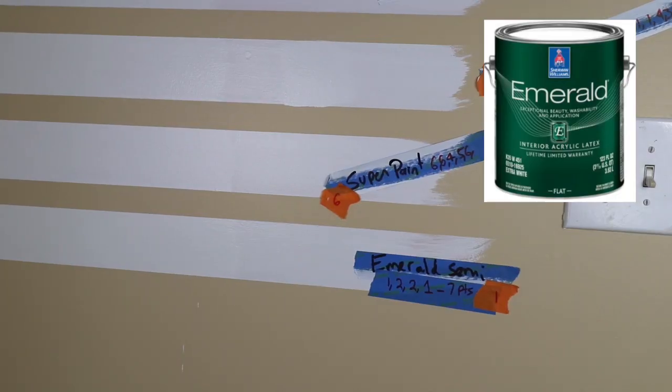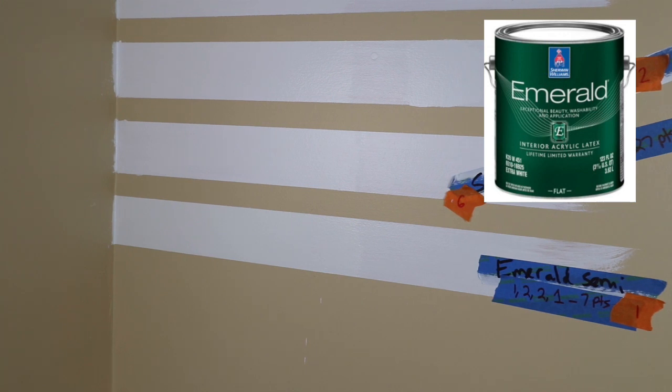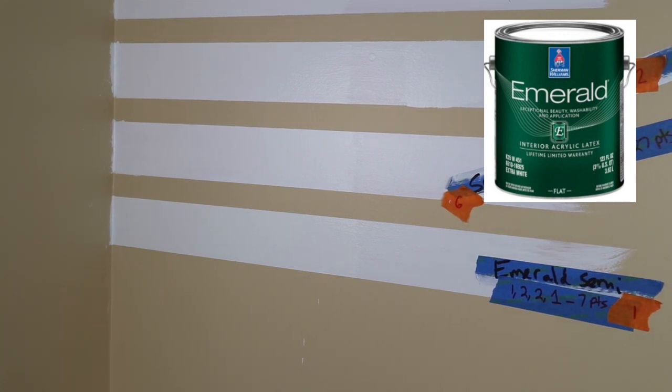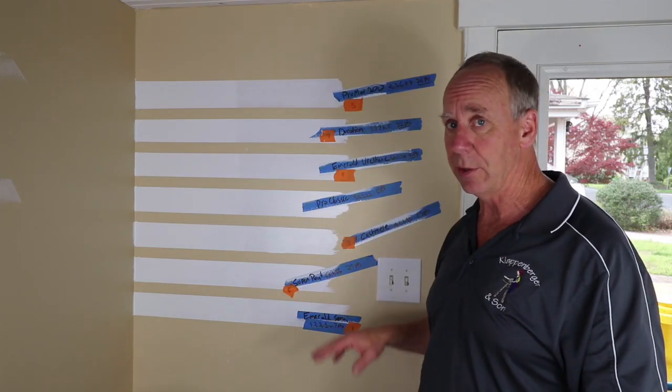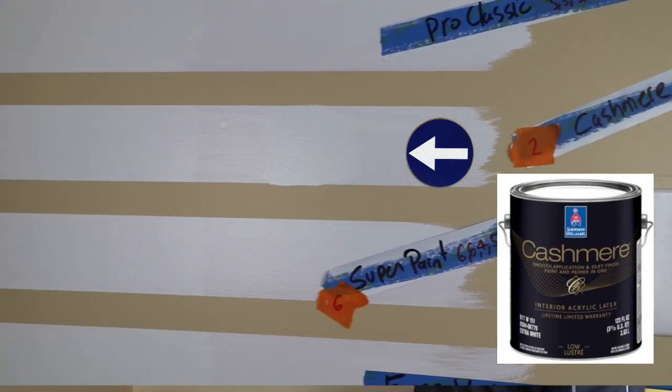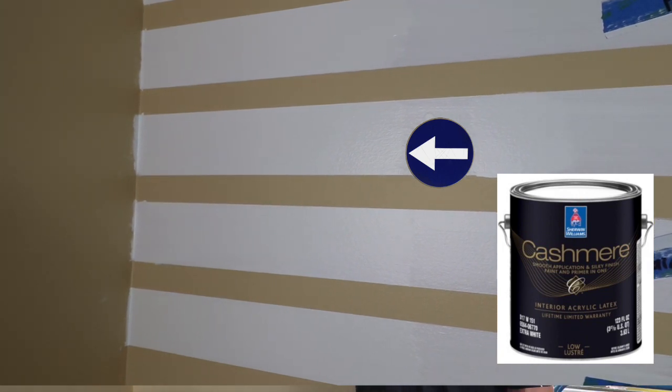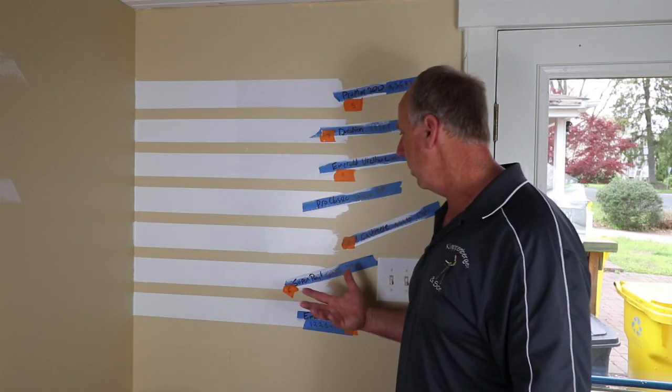Coming in first place, the best coverage, four judges agreed that Emerald Semi-Gloss was number one. It had a total of seven points, a couple first place votes, a couple second place votes. Very good. Cashmere second place. It's got a first place and now two second place finishes. Just has a really good coverage to it.